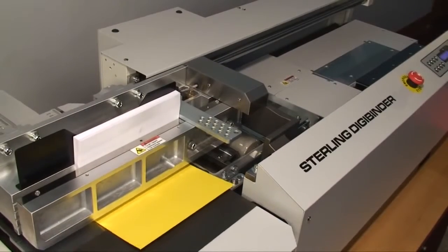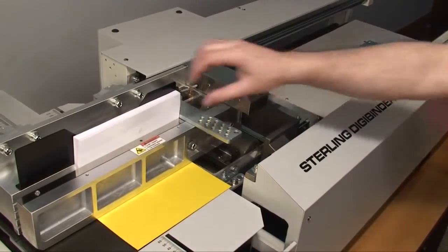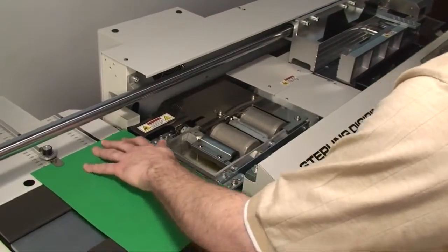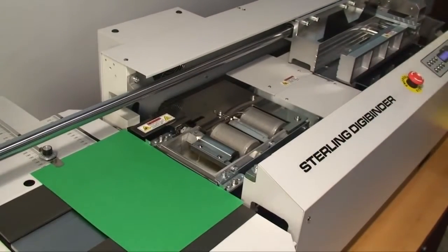It roughs and notches, applies the glue, meters the glue, and nips the book at the desired thickness. Here we are binding about four books per minute, or 240 books per hour.